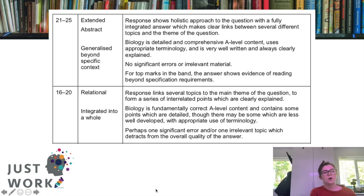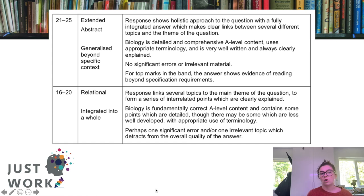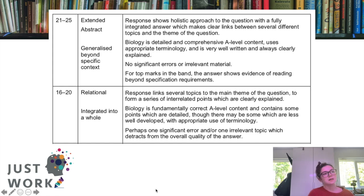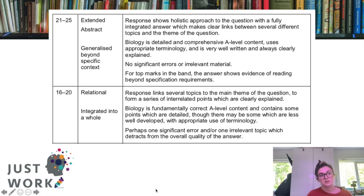The bands we're really looking for are four and five. Band four is relational — integrated into a whole, like a story where we're linking topics together and linking them to the main theme of the question. The biology is pretty much all at A-level standard with some detailed points, though some areas could be less developed and there might be one significant error. Band five is extended abstract: a holistic, fully integrated answer with detailed and comprehensive A-level content, correct terminology, no significant errors, and evidence of reading beyond specification requirements.